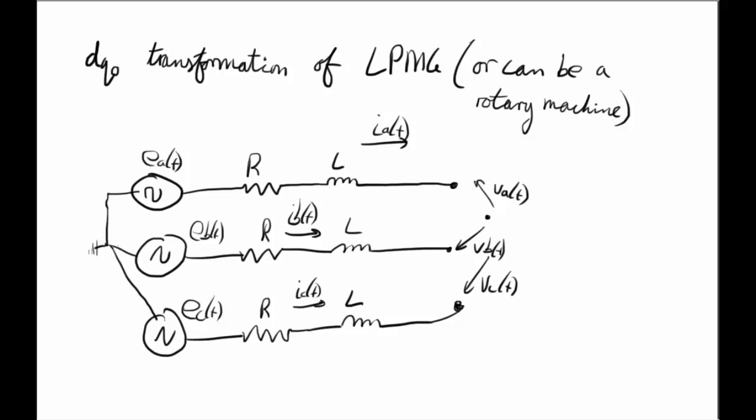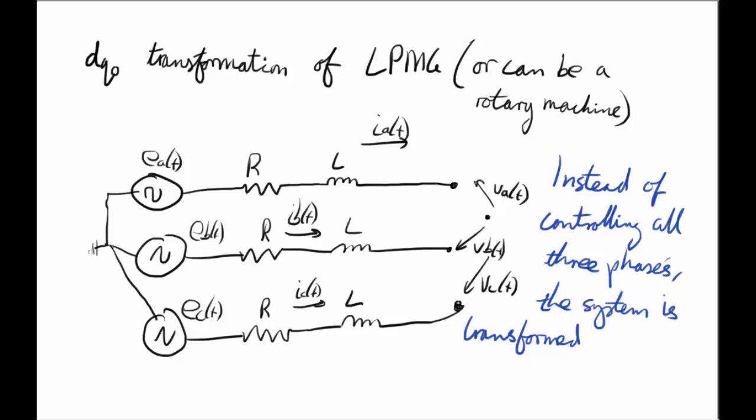Or in my case it would be on a back-to-back voltage source converter. So it's fairly inconvenient to control the system by the three phases, so instead of controlling all three phases, the system is going to be transformed into two phases so it makes control a lot simpler.